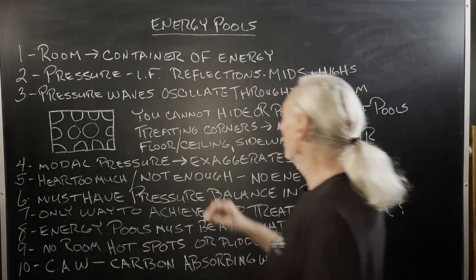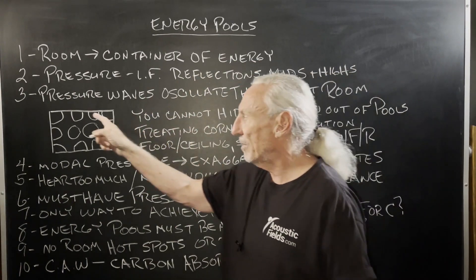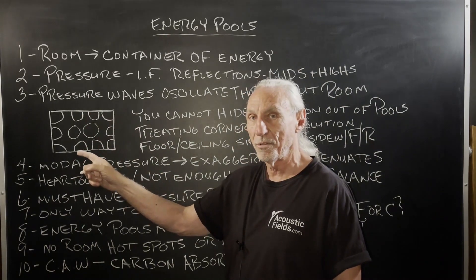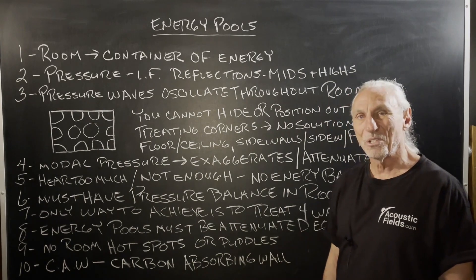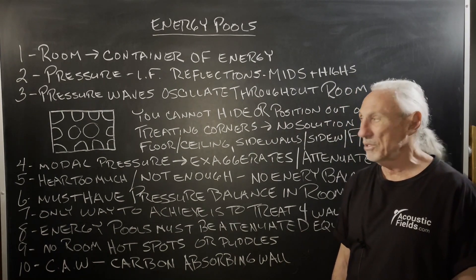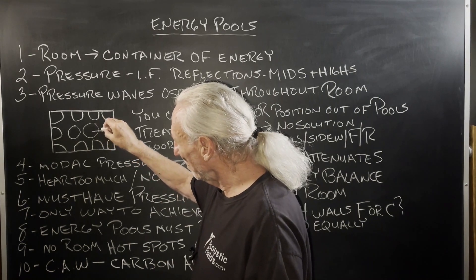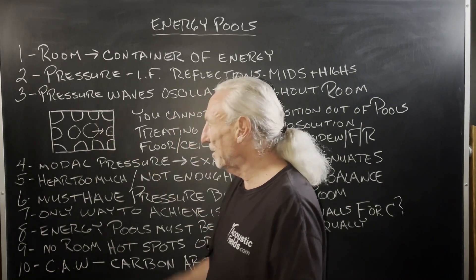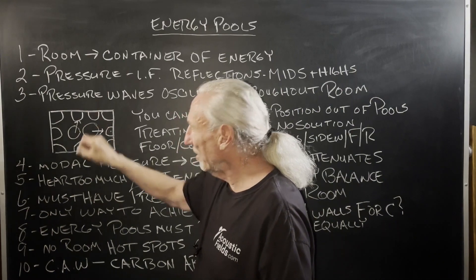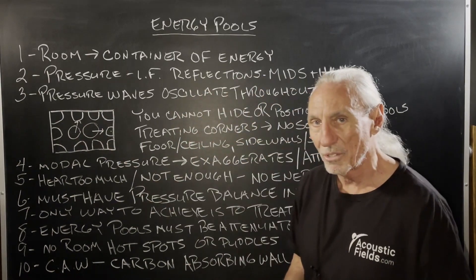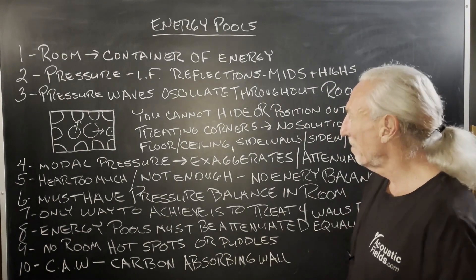Low frequency pressure, reflections, or mids and highs — pressure waves oscillate throughout the room from all the wall surfaces. This is why you cannot hide or position your way out of these modal issues. You may move out of one here, maybe move from there to there, but then you've got to deal with that one. You may move from this one to that one, but then you've got to deal with boundary surface issues. So you really can't get away from it.